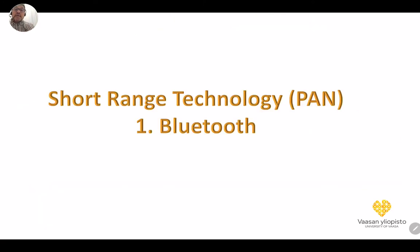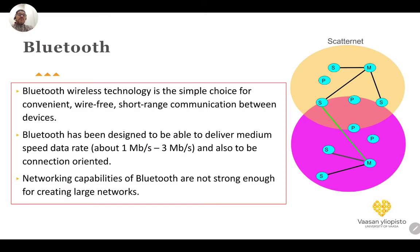After this review of routing and IP networking, we move to short-range technologies, starting with Personal Area Networks and Bluetooth. We won't explain every algorithmic detail inside Bluetooth, but we want to understand the general characteristics, what Bluetooth can and cannot do, and the best applications it can be used for. Bluetooth is a wireless technology and a simple choice for convenient wire-free short-range communication between devices.